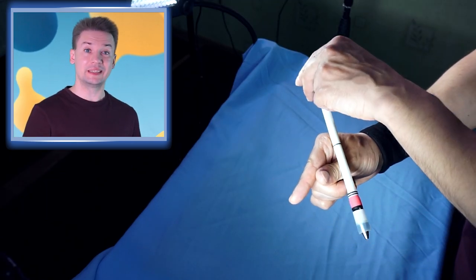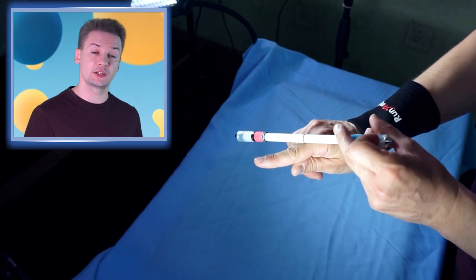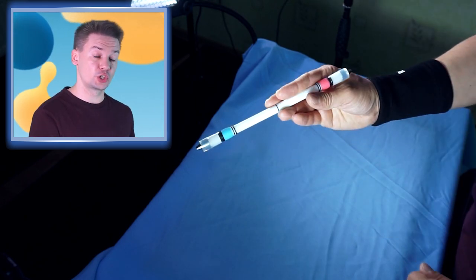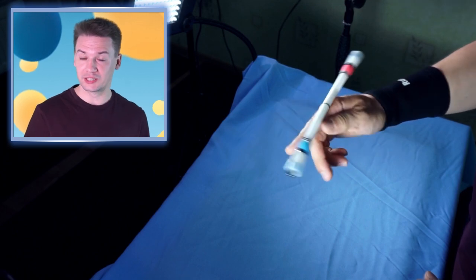After going around thumb, pen continues moving and makes another circle, another rotation over index finger. So now we need to do the same, but in reverse.